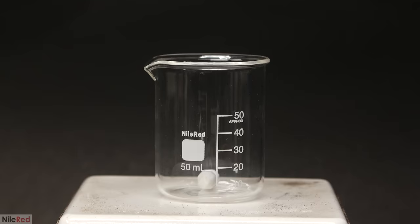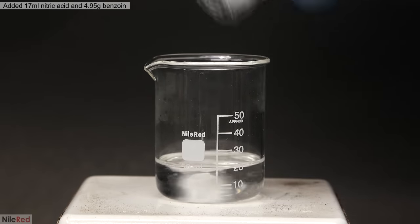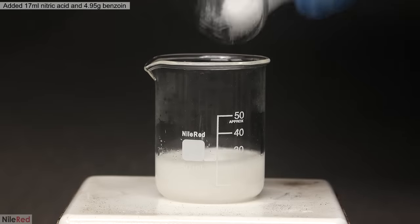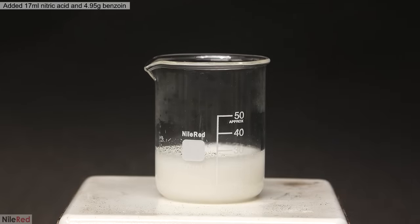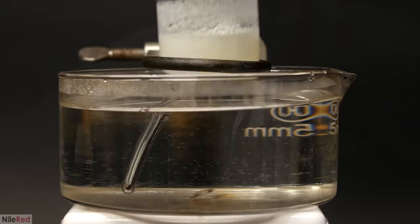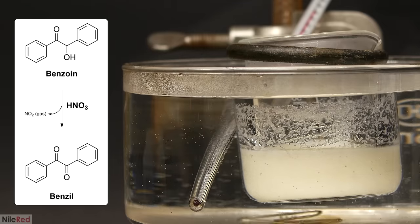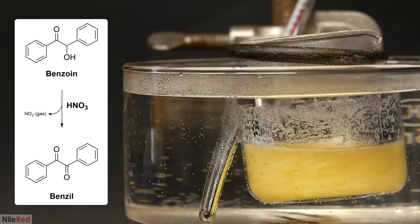The next thing I needed to do was to oxidize it to benzyl. Into a beaker, I poured 17 mils of concentrated nitric acid, and added the benzoin in small portions. I let it mix for a couple minutes, and then I put the beaker in a water bath at around 70°C. As it heated up, the nitric acid started reacting with the benzoin to make benzyl and nitrogen dioxide gas.